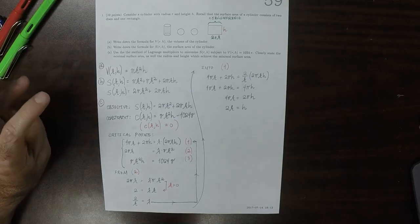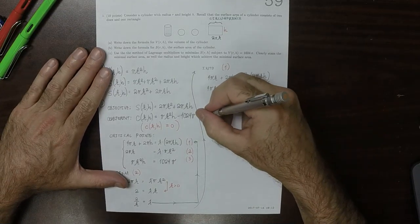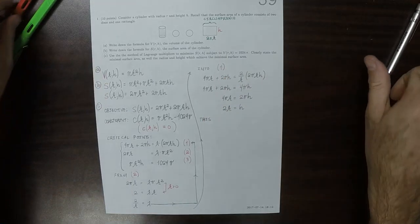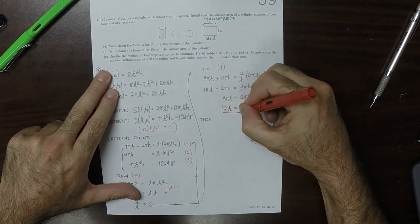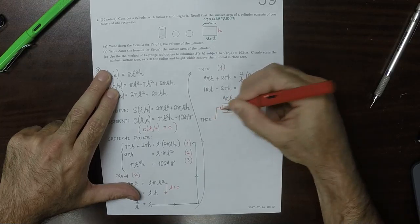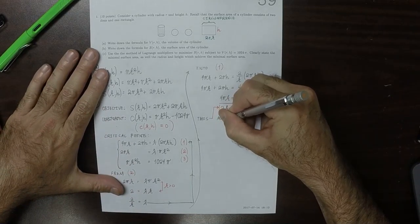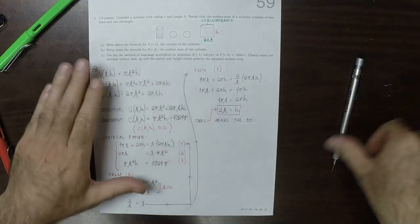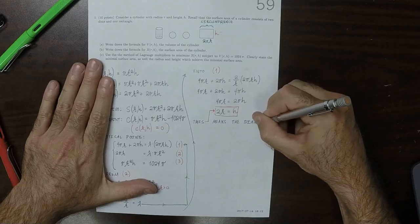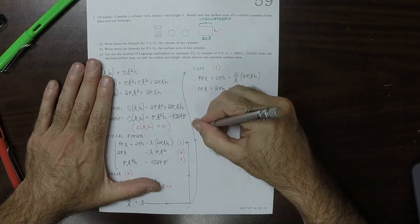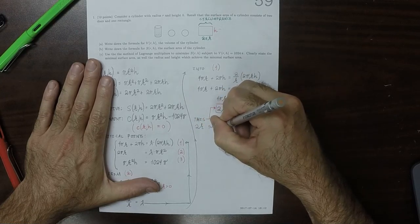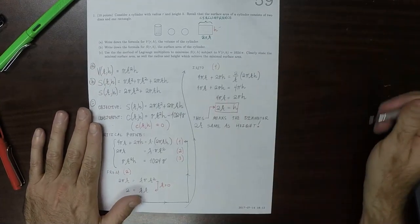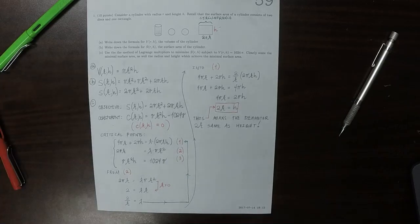Okay, so what does this mean? This means the diameter, 2 r, is the same as the height.